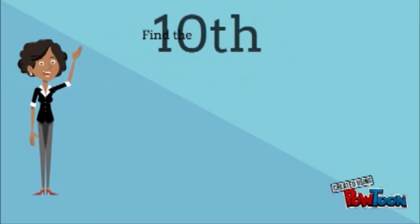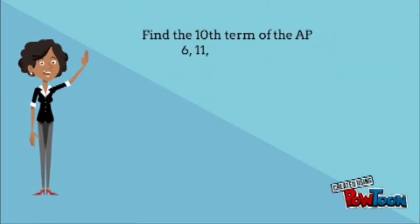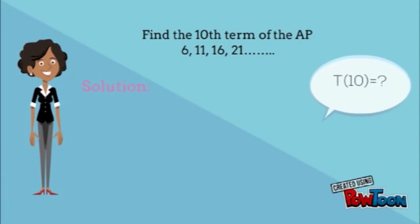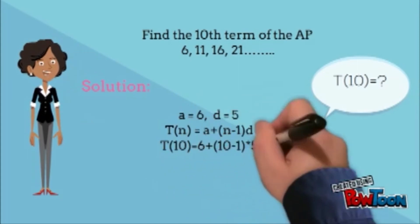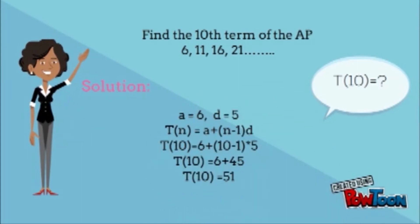Find the 10th term of the AP 6, 11, 16, 21. Here, we have to find 10th term, that is T(10) of the given AP. First term is 6, common difference is 5.